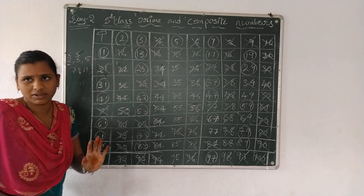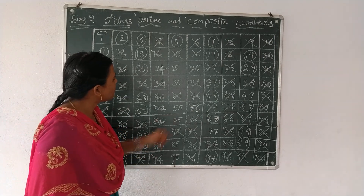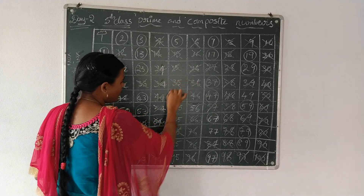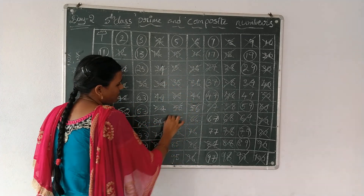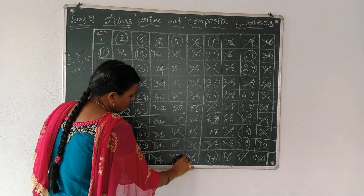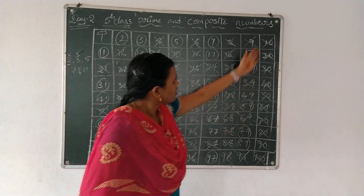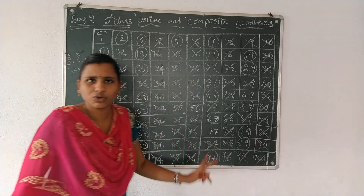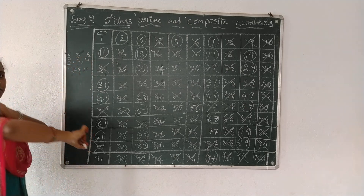Let's take the 5 table. Which are cancelled in the 5 table? 25, 35 — all already cancelled. 55, 65, 85, 95. The remaining numbers here are already cancelled in the 2 table level as well. So the 5 table is also completed.